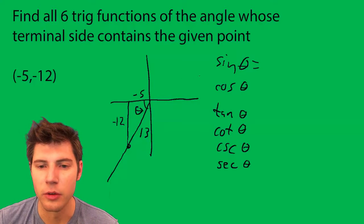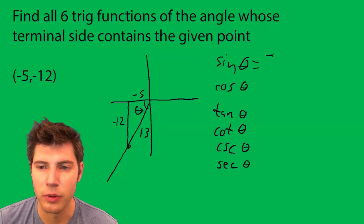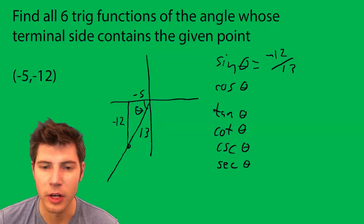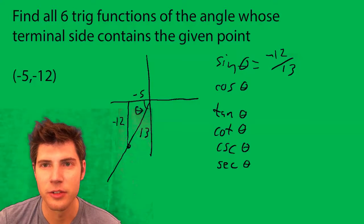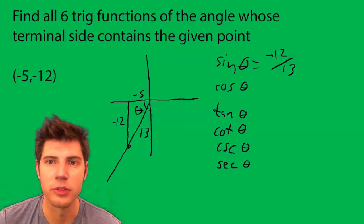So sine is opposite over hypotenuse, so it's going to be -12/13. Note how I kept the negative here. It's very important, but the hypotenuse is always positive.